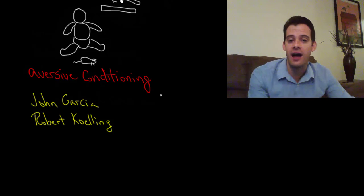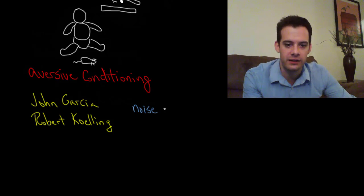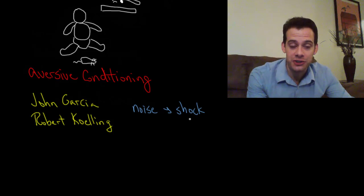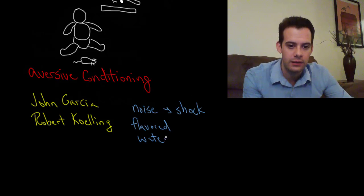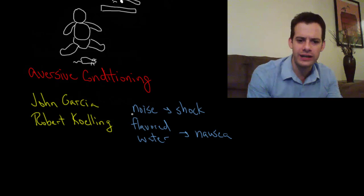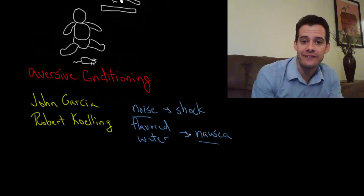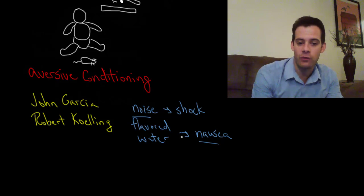Garcia and Koling then set out to study this in more detail, trying a number of different combinations of stimuli and responses. They found they could get a noise to be associated with an electric shock — play a noise, shock the rat, and the rat would show a negative emotional response to the noise. They also found they could give a rat flavored water, then cause nausea via radiation, and the rat would associate the water with nausea. But they found they couldn't flip these pairs — they couldn't get the rat to associate noise with nausea, because the rat seemed to know that water can make it sick but noises don't cause this.